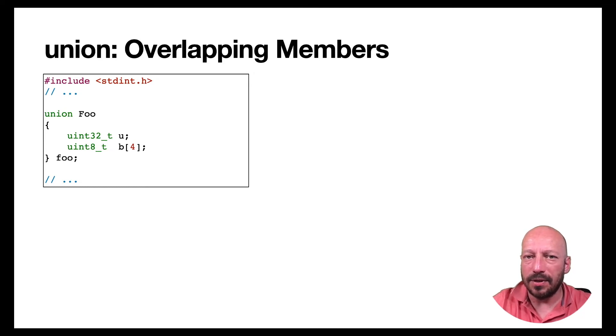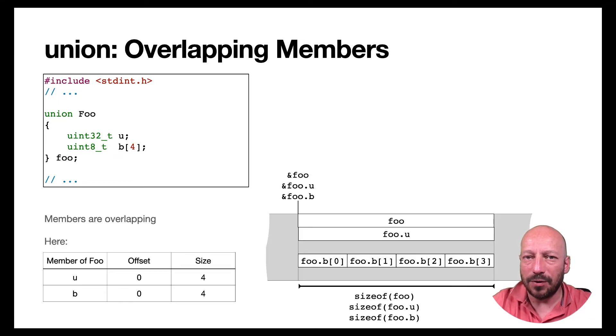And that also means if you have a variable of a union type, this variable also has members that you can access as you access members of a struct. The difference is that members of a union type always have an offset of zero. That's why these members overlap in memory. And the size of a union is the maximum size of its members. So in this case, because both members have a size of four, the size of this union type is four.